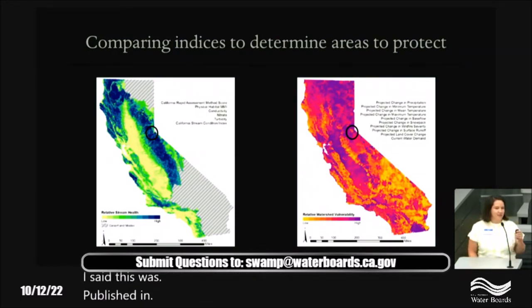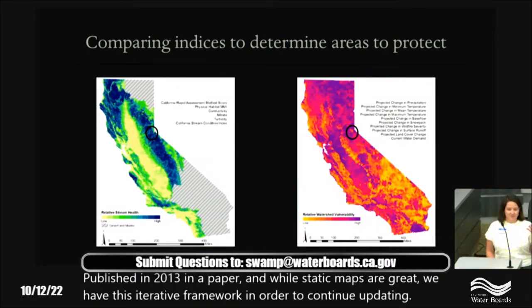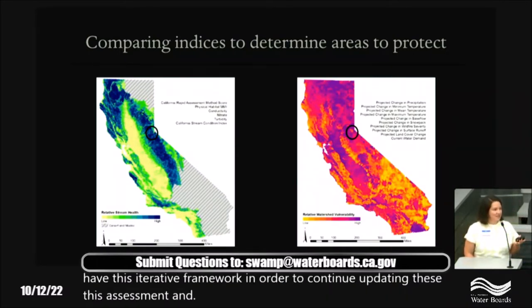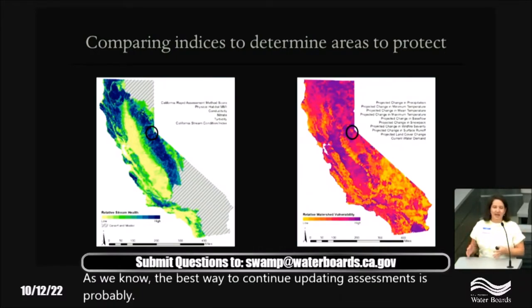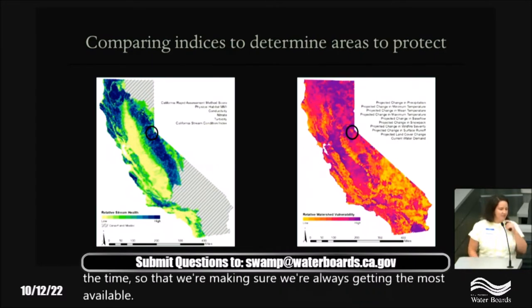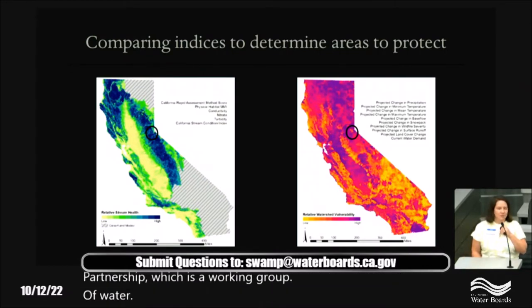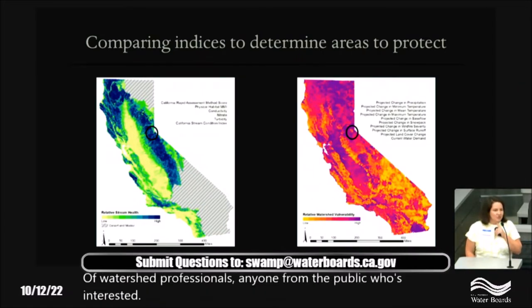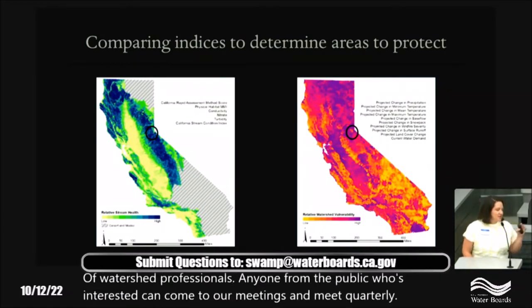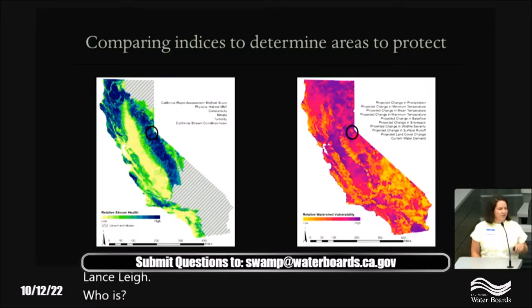This was published in 2013. While static maps are great, we have this iterative framework to continue updating the assessment. The best way to continue updating assessments is probably not in a report but in something we can access at any time, ensuring we always have the most available data. The Healthy Watersheds Partnership — a working group of watershed professionals where anyone from the public can join — meets quarterly to discuss updating this assessment.